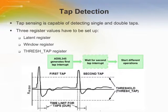Tap sensing is capable of detecting single and double taps. If only the single tap function is in use, the single tap interrupt is triggered when the acceleration goes below the threshold, as long as the maximum tap duration time has not been exceeded. If both single and double tap functions are in use, the single tap interrupt is triggered when the double tap event has been either validated or invalidated.